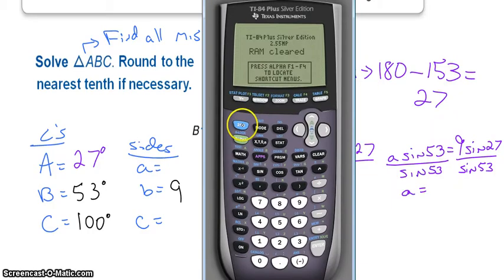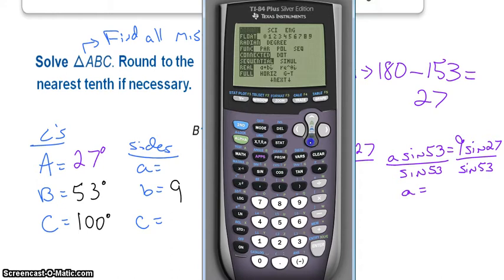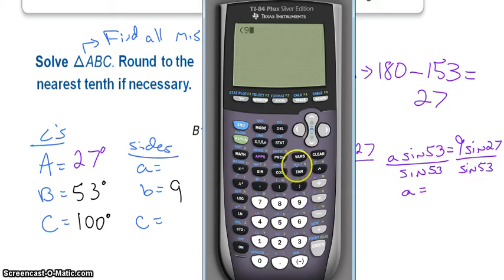So we pull out our calculators. Make sure we are in degrees and again unless you take out the batteries or reset the RAM it should stay in degrees once you make it in degrees. So I'm just going to type this right in. Put my parentheses just so that way this whole numerator is divided by sine of 53. 9 sine of 27. Close my parentheses. Divided by sine of 53. And I get about 5.1.